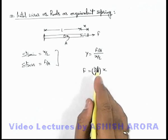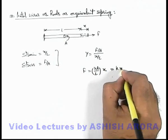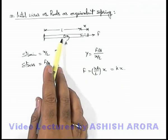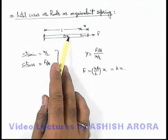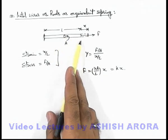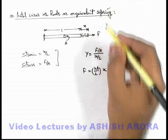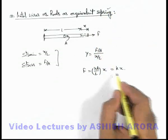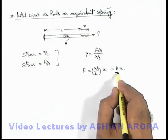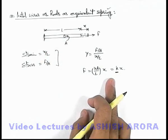Here Y, A, and L are constants, so this can be written as kx. We can say the restoring force is proportional to the deformation length, which is what happens in the case of a spring. And if we treat this rod with an equivalent force constant k, then it can be treated like a spring.